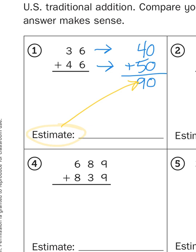Now, this answer, 90, is going to inform how big my answer should be for the actual problem, 36 plus 46. So my answer should be around the range of 90. Let's see what happens.